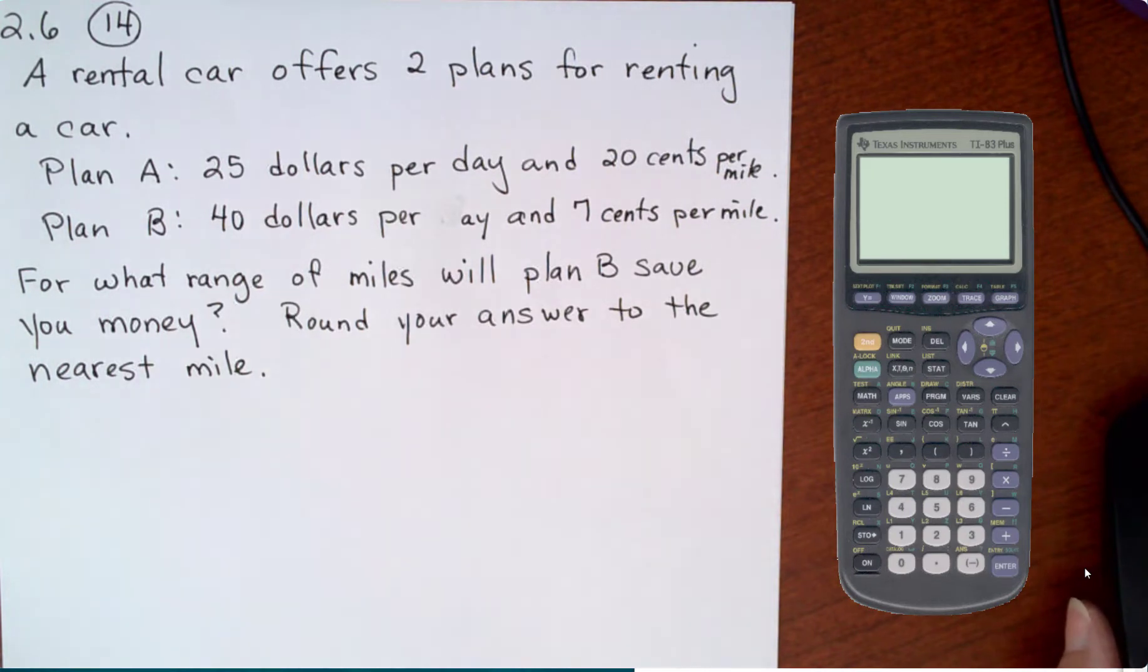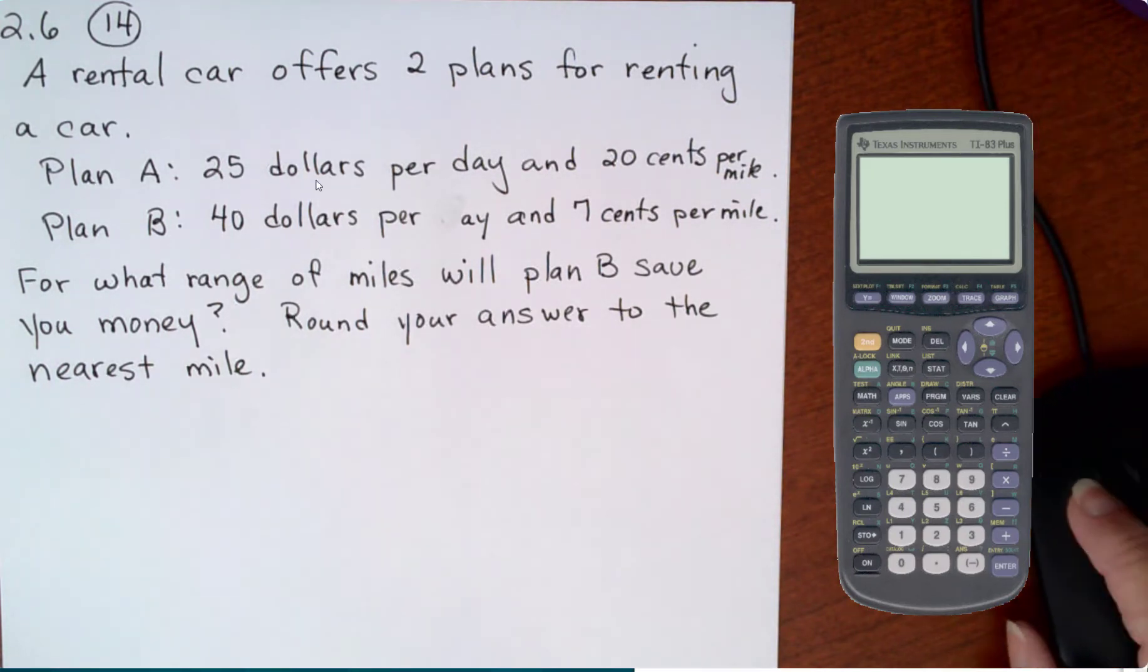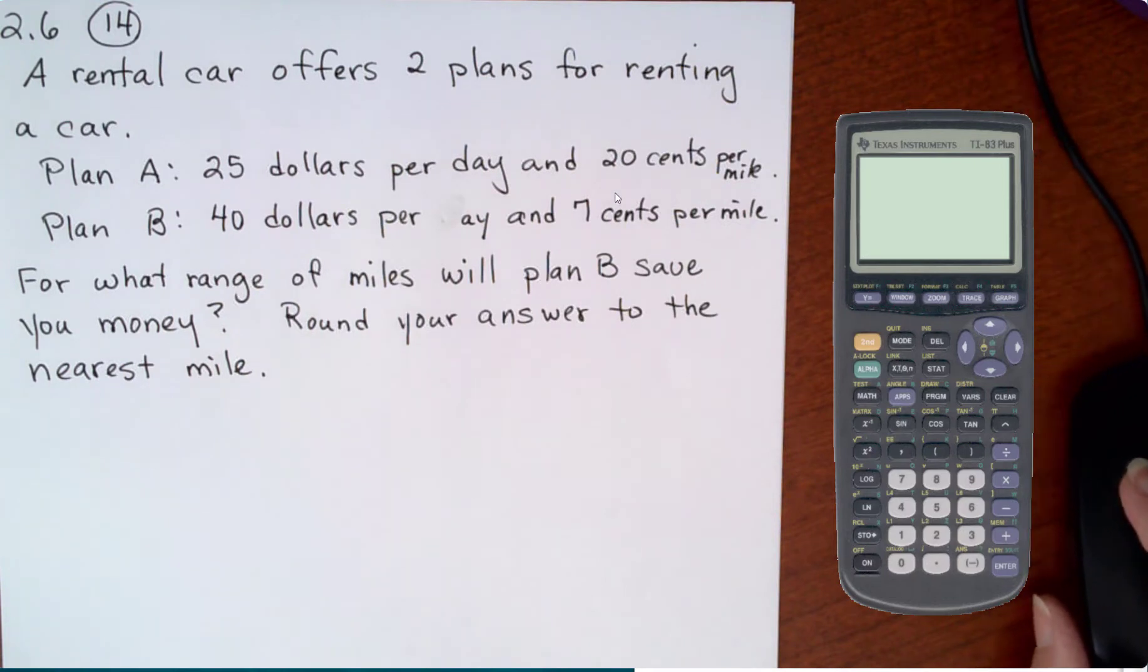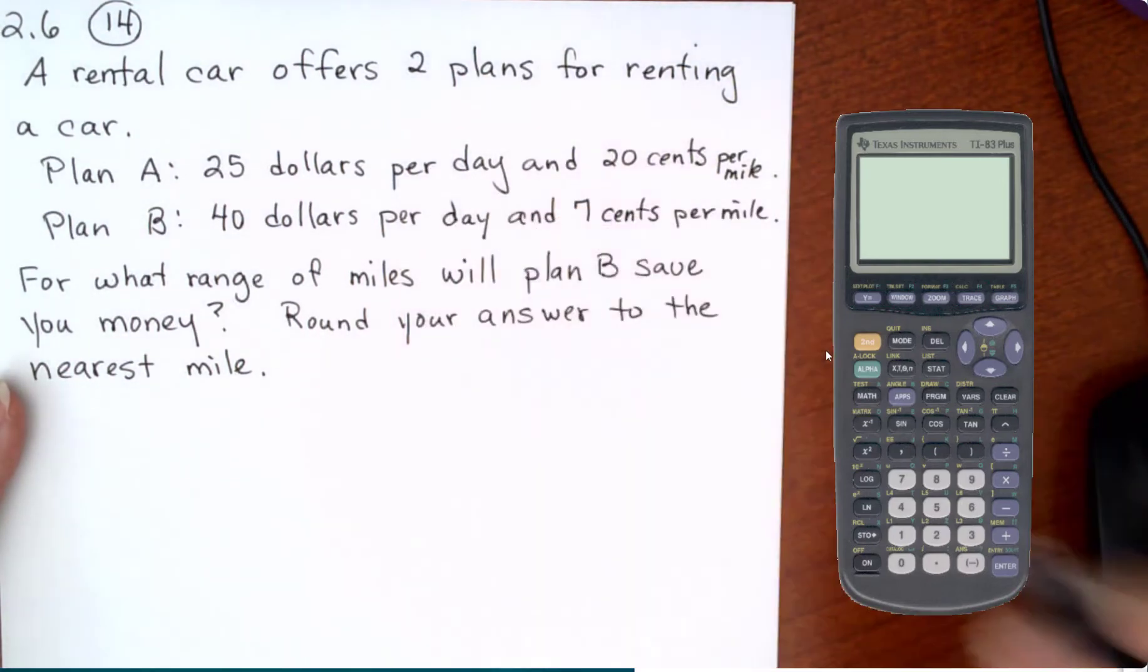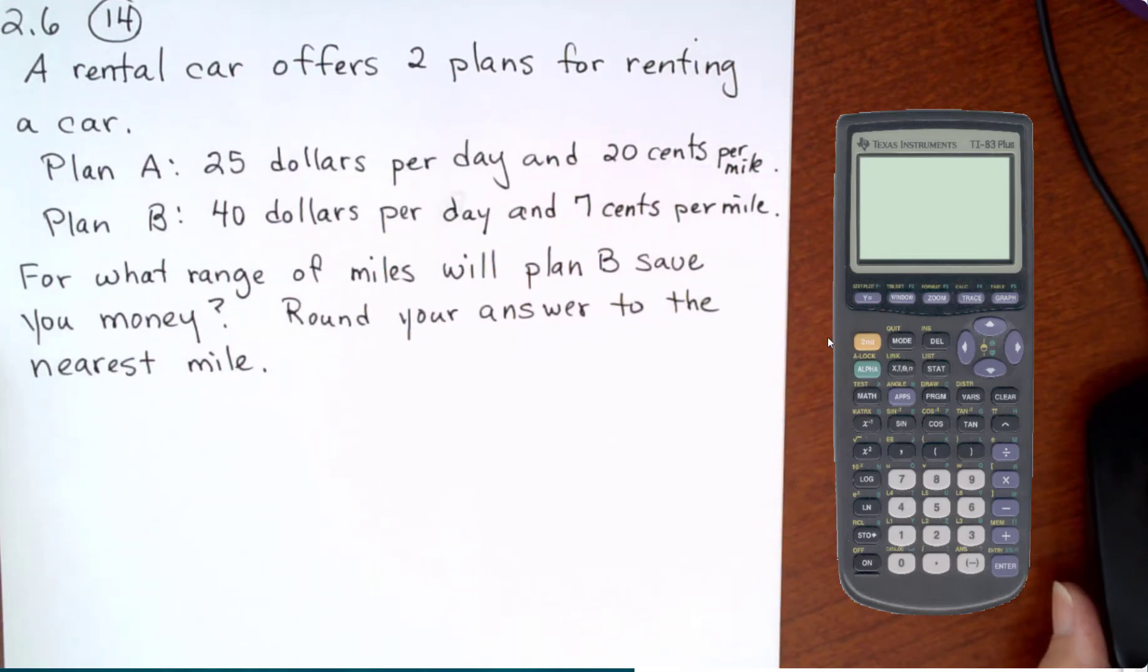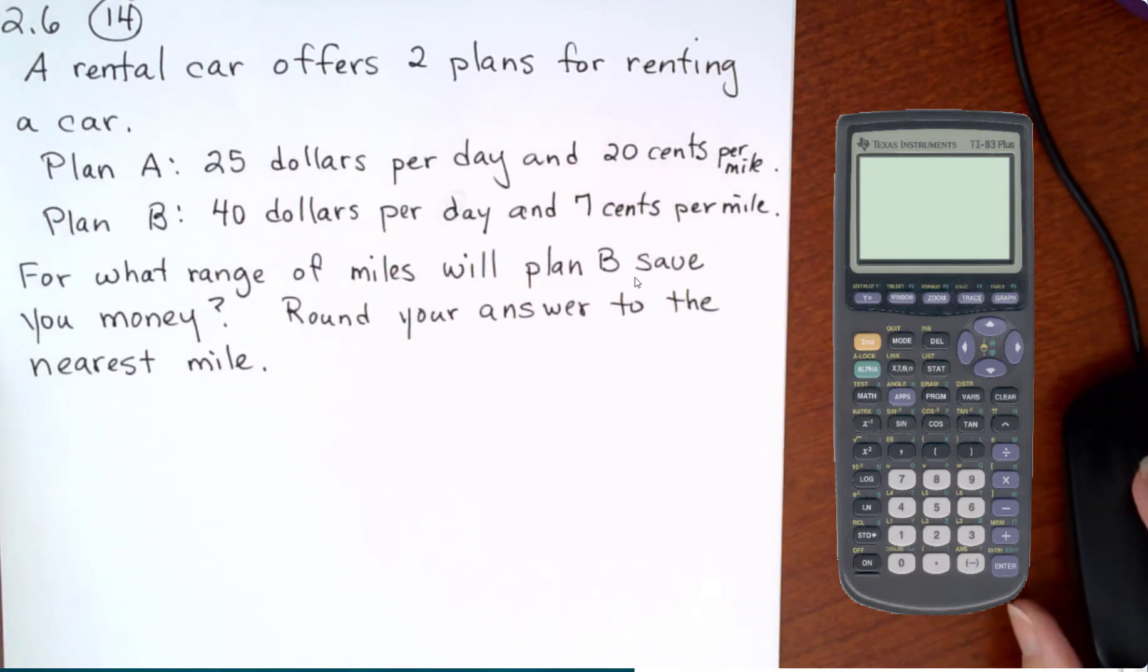A rental car offers two plans for renting a car. Plan A is $25 per day and $0.20 per mile. Plan B is $40 per day and $0.07 per mile. For what range of miles will Plan B save you money?